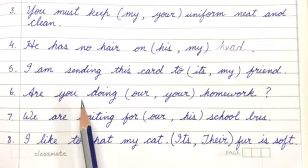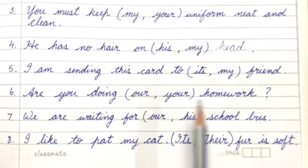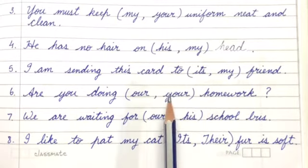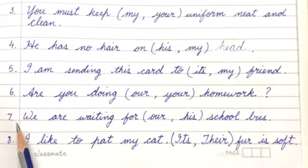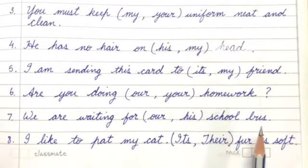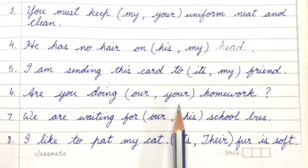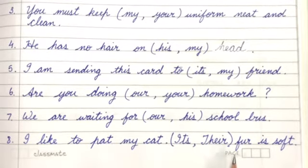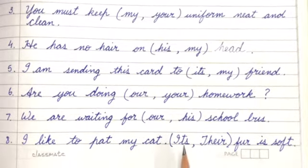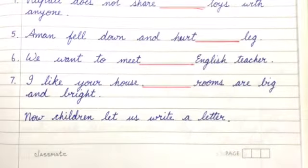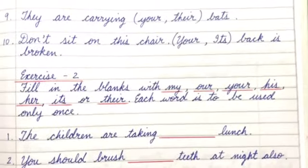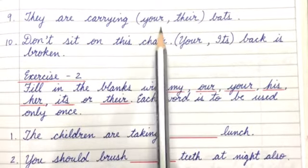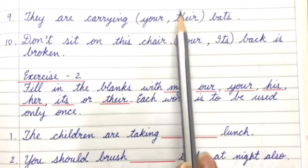Number 6: Are you doing your homework? Tick mark 'your homework'. Number 7: We are waiting for our school bus — it's 'our' school bus. Number 8: I like to pat my cat. Its fur is soft — tick mark 'its'. Number 9: They are carrying their bats — tick mark 'their'.